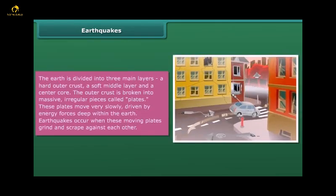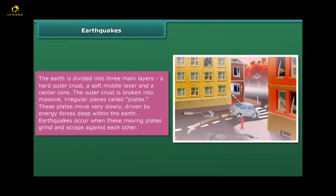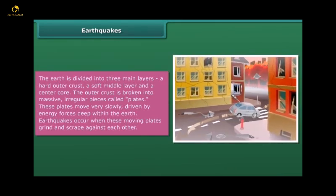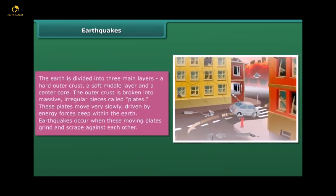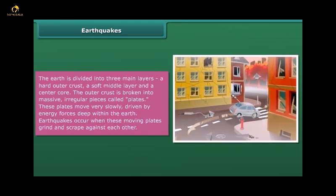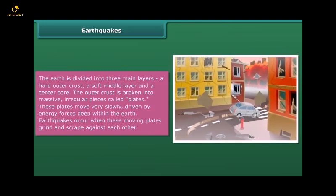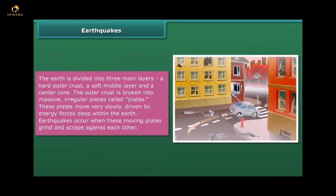The earth is divided into three main layers: a hard outer crust, a soft middle layer, and a center core. The outer crust is broken into massive, irregular pieces called plates. These plates move over slowly, driven by energy forces deep within the earth. Earthquakes occur when these moving plates grind and scrape against each other.